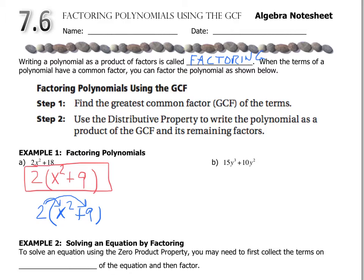On the second one for letter b, I've got a couple things going on. When I look at both those terms, first the numbers, I see a 5. Both 15 is divisible by 5 and 10 is divisible by 5. But in this case I also see y's in both of them.